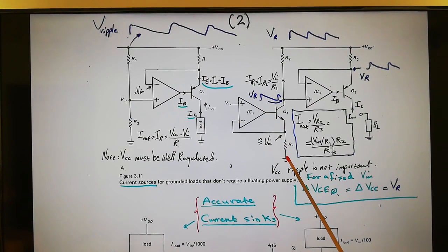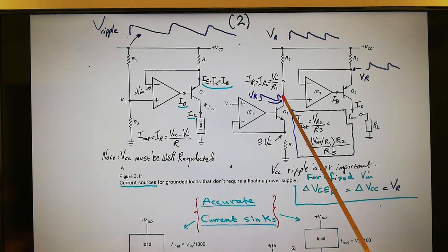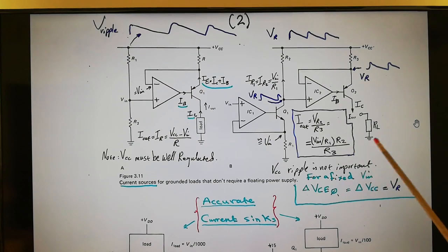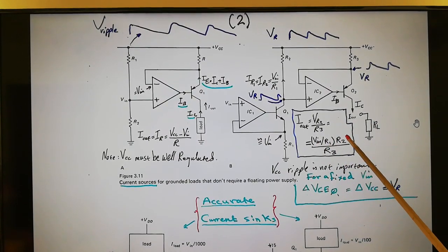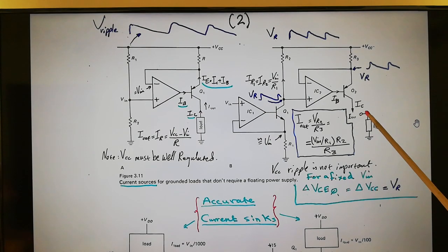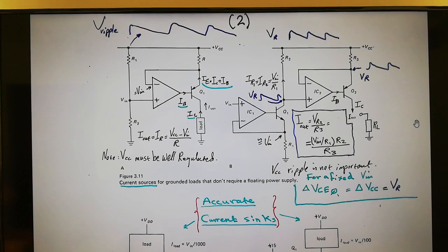Combining all the equations: I_out = (VIN/R1) × (R2/R3), or equivalently VIN × R2 / (R1 × R3). That is the constant current across the load — the variable voltage no longer matters.